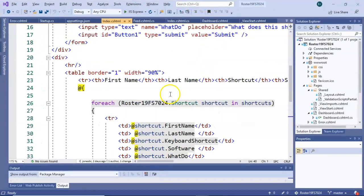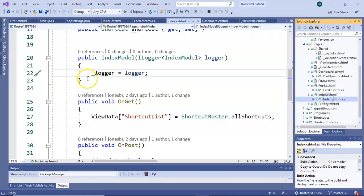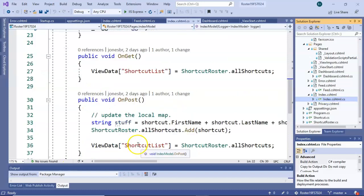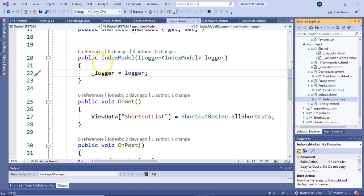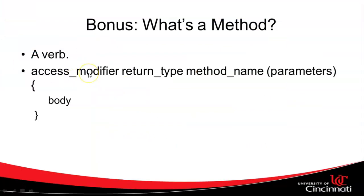We can take a look at an example, look at our code behind file. And you'll see that this is a method: public void get, public void on post. Each of these are methods. So they have a syntax access modifier, which is public in the cases that I showed.